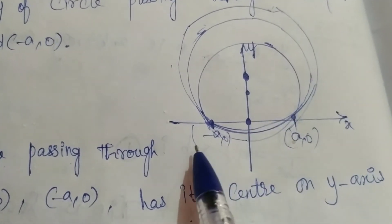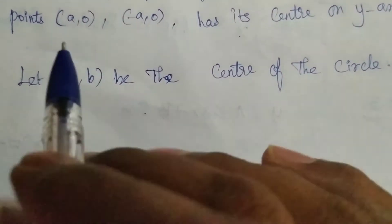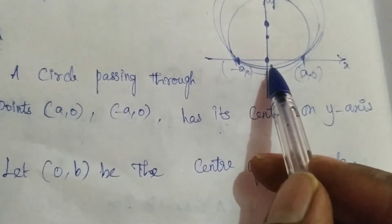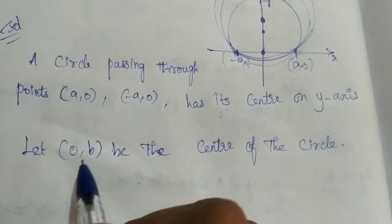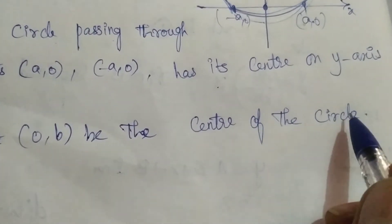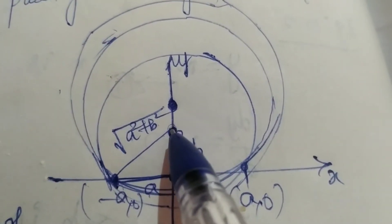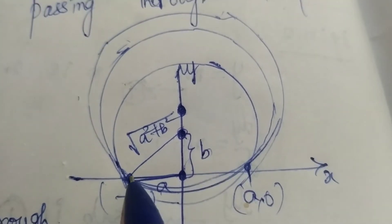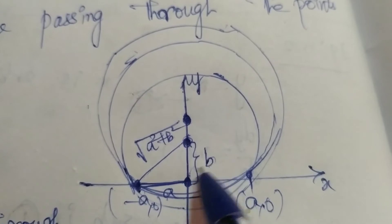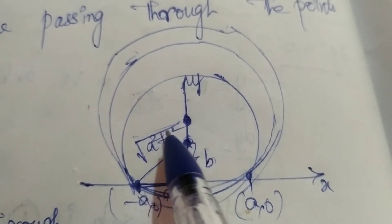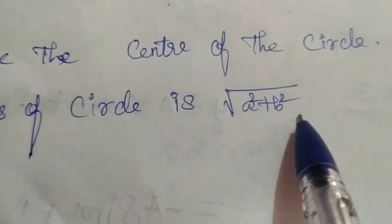Each circle passes through (a, 0) and (−a, 0), so the center lies on the y-axis at point (0, b). The radius is found using the Pythagorean concept: since the adjacent side is a and the opposite side is b, the hypotenuse — the radius — equals the square root of a squared plus b squared.